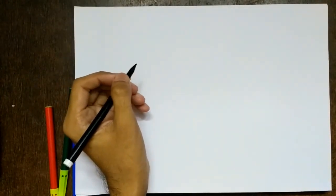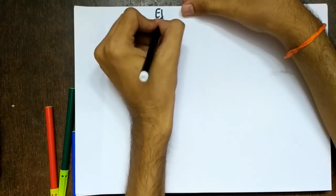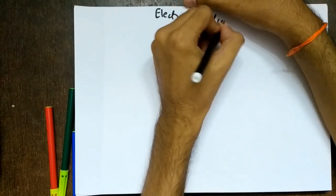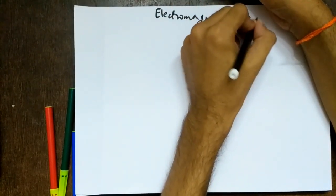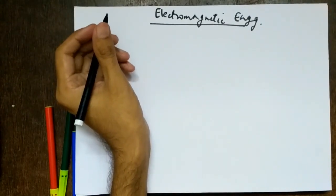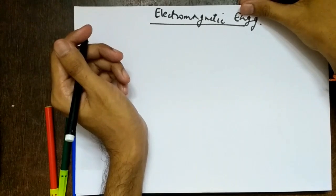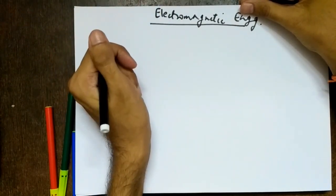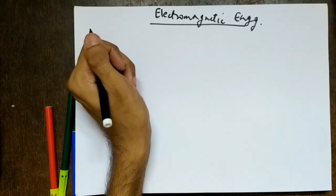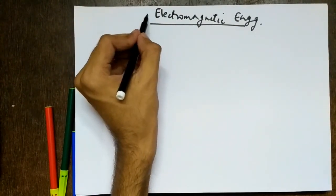Good afternoon students. The next course for you is electromagnetic engineering — this is called electromagnetic engineering for EXTC and engineering electromagnetics for ETRX. There are some differences in the syllabus for EXTC and ETRX that I will address later as and when the need arises. So the first thing is: why do we study this subject, and where did it come from?